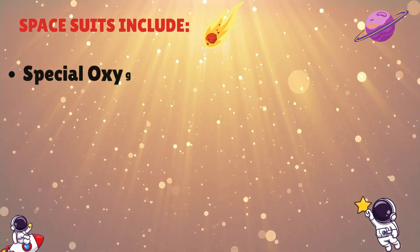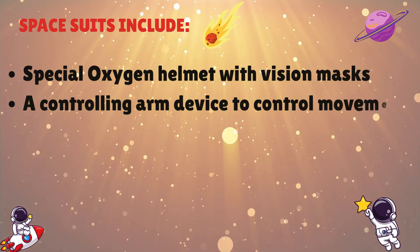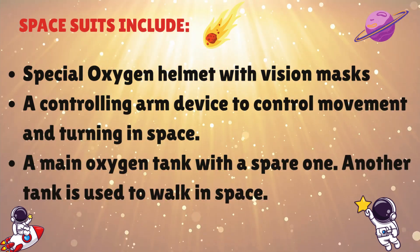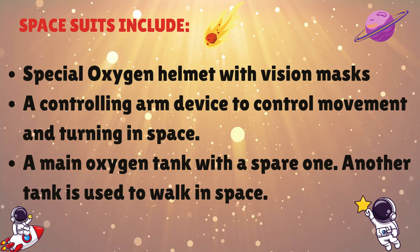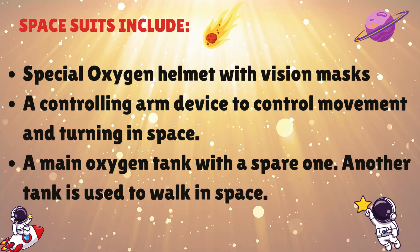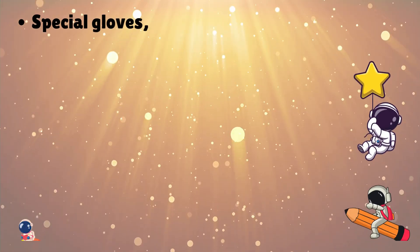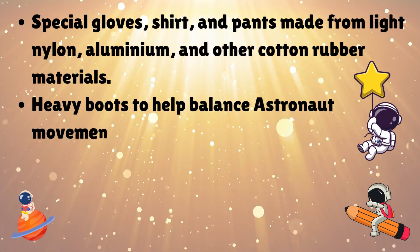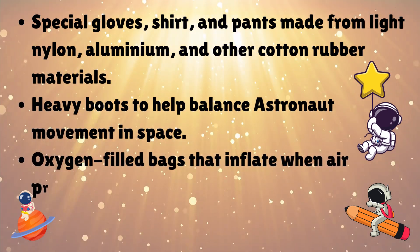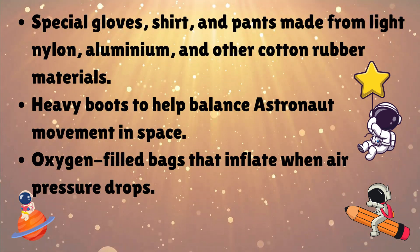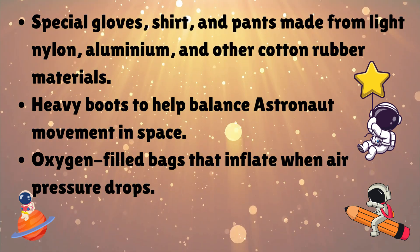The space suit includes a special oxygen helmet with vision masks and a controlling arm device to control movement and turning in space. A main oxygen tank and a spare one. Another tank is used to walk in space. Special gloves, shirt, and pants made from white nylon, aluminum, and other cotton rubber materials. Heavy boots to help balance astronaut movement in space. Oxygen fill bags that inflate when air pressure drops.